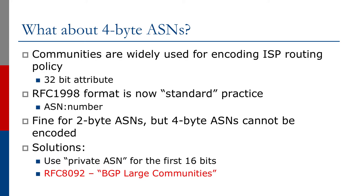The format described in RFC 1998 uses AS number colon any other number — taking the 32-bit community attribute and dividing it into two 16-bit integers. But AS numbers are now four bytes, 32 bits. So what happens if you have a 32-bit AS number bigger than 65535? You can't use this standard practice. Even though it's just a convention used by operators rather than a formal standard, it is so fixed in operational community best practices that the expected format is now AS number colon some locally defined number.